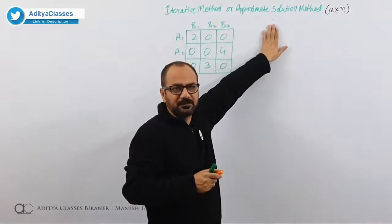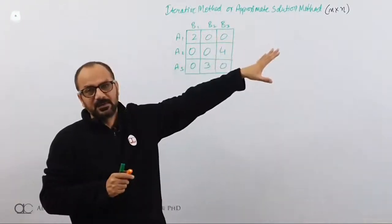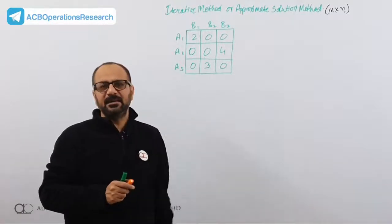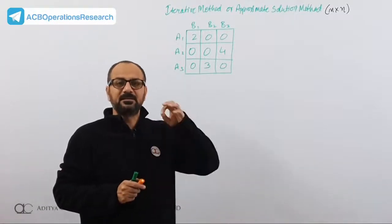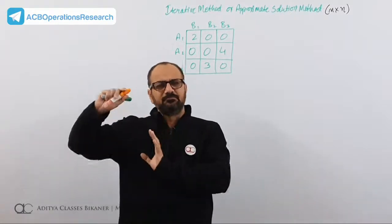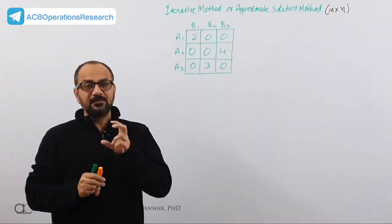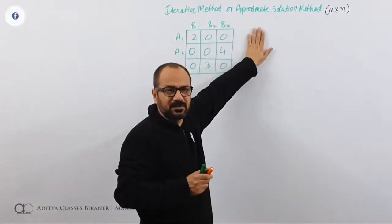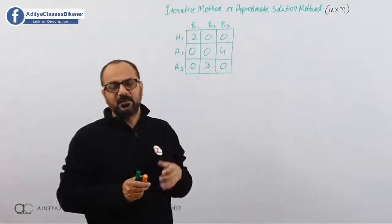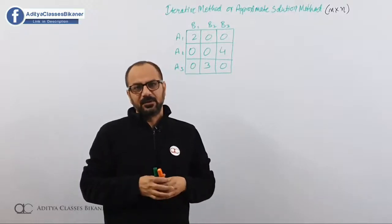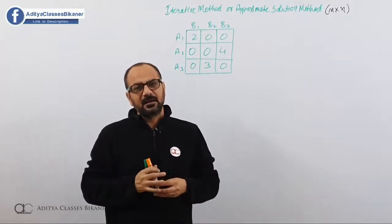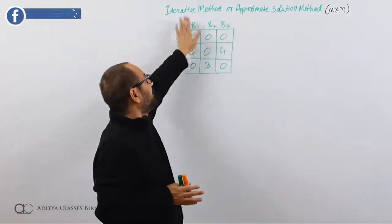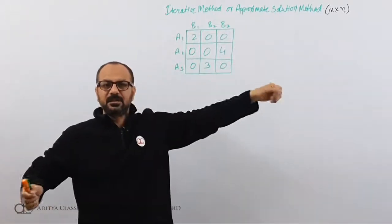The first method is the iterative method, also called the approximate solution method. As the name suggests, whatever solution we get will be approximately the best solution — it might not be the best, but it will be approximately as good as it can get. It is called iterative because there are iterations that continue one after another. The more iterations you make, the better the solution you get.